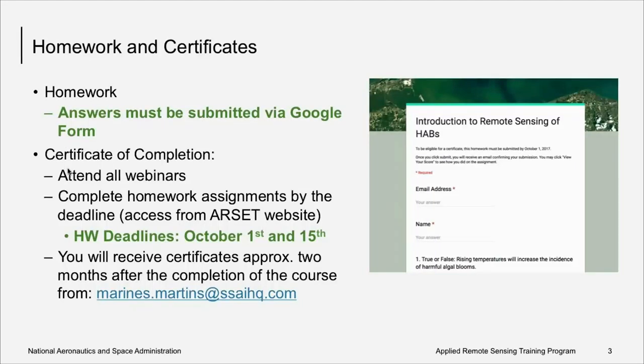You'll have two homework assignments after weeks two and four, and they will be submitted through Google Forms. To receive credit, you must submit all answers via Google Forms by the deadline, and the deadlines are October 1st and October 15th. To receive the certificate of completion, you must attend all four live webinars and complete both homework assignments by their due date. Please be patient because it takes about two months from the end of the course for certificates to be available.